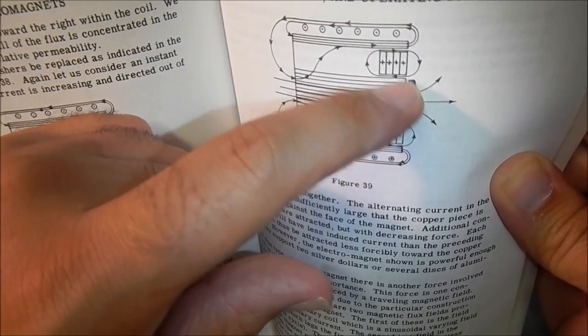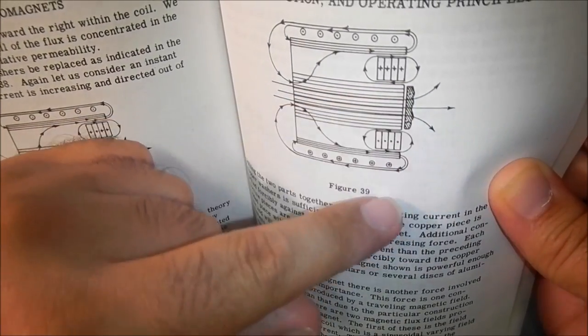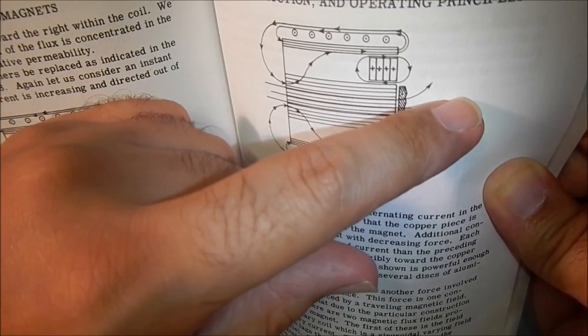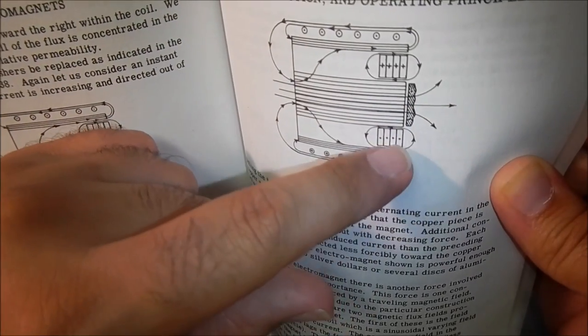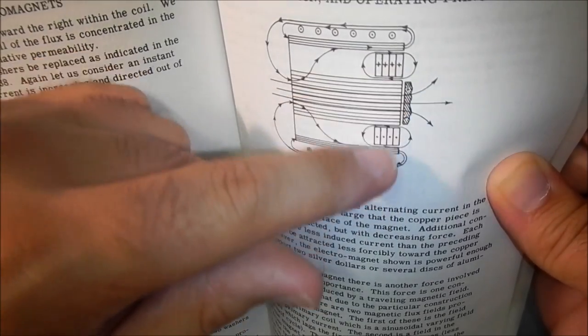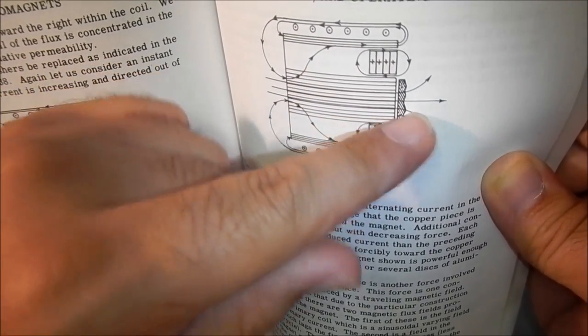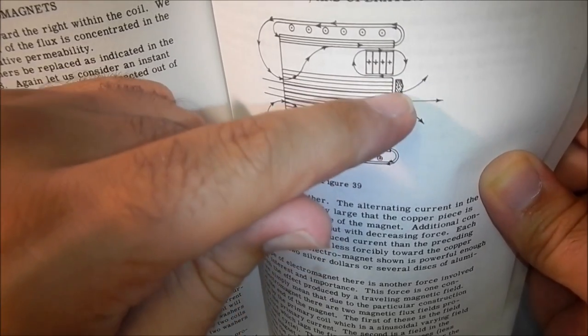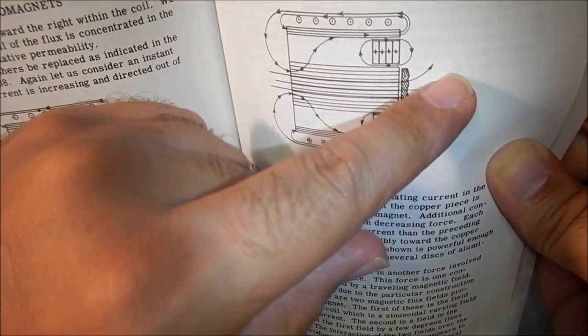They would have the opposite polarity of the inducing coil, so naturally it would want to repel. But the stack of copper washers also had an induced current that was similar and attractive to the current circulating in the sample. The net effect would be an attractive force on the sample.